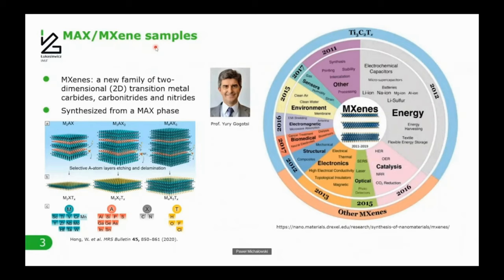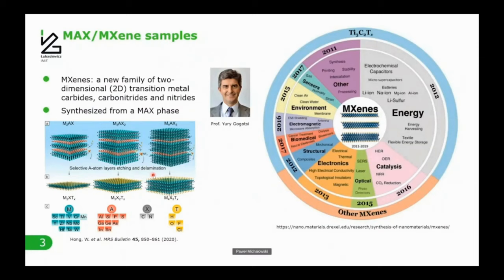I would like to make a short introduction to the samples we'll be discussing. MAX and MXene samples — particularly the MXenes — are very important right now. This is a family of two-dimensional materials: transition metal carbides, carbonitrides, and nitrides, discovered in 2011 by a group including Professor Yuri Gogotsi, who is also a co-author of this work. These materials are synthesized from a MAX phase by selective etching of the A layer, which is in many cases aluminum.